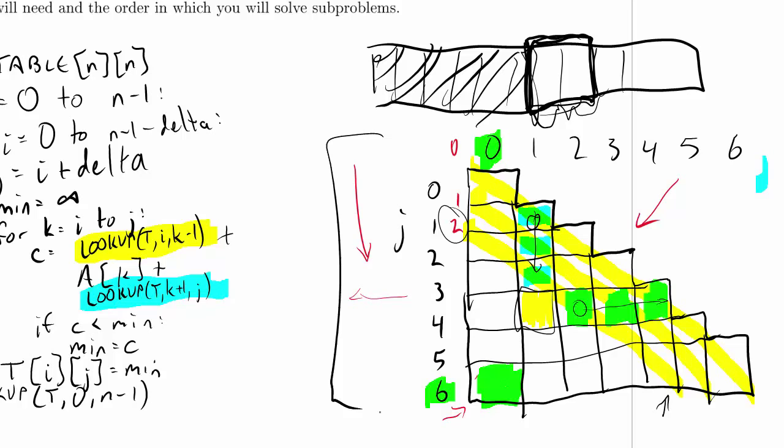So in my analysis, what I really want to know is, how many table entries do I fill in? And in this case, with this triangular shaped table, the answer is all of them. And for a given entry, how long does it take to fill that entry in, assuming that all of the other entries are accounted for?